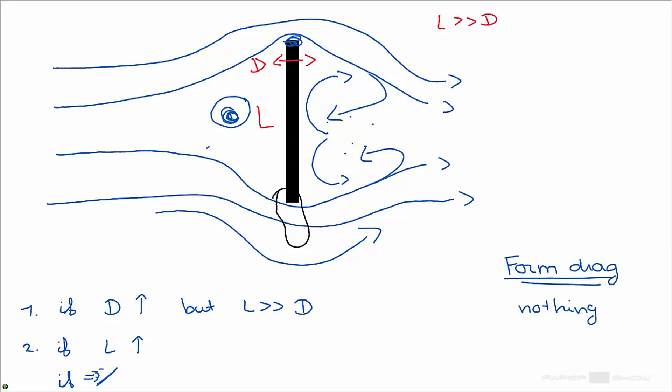So the stagnation point even grows bigger. This grows more messy, and therefore the form drag increases.